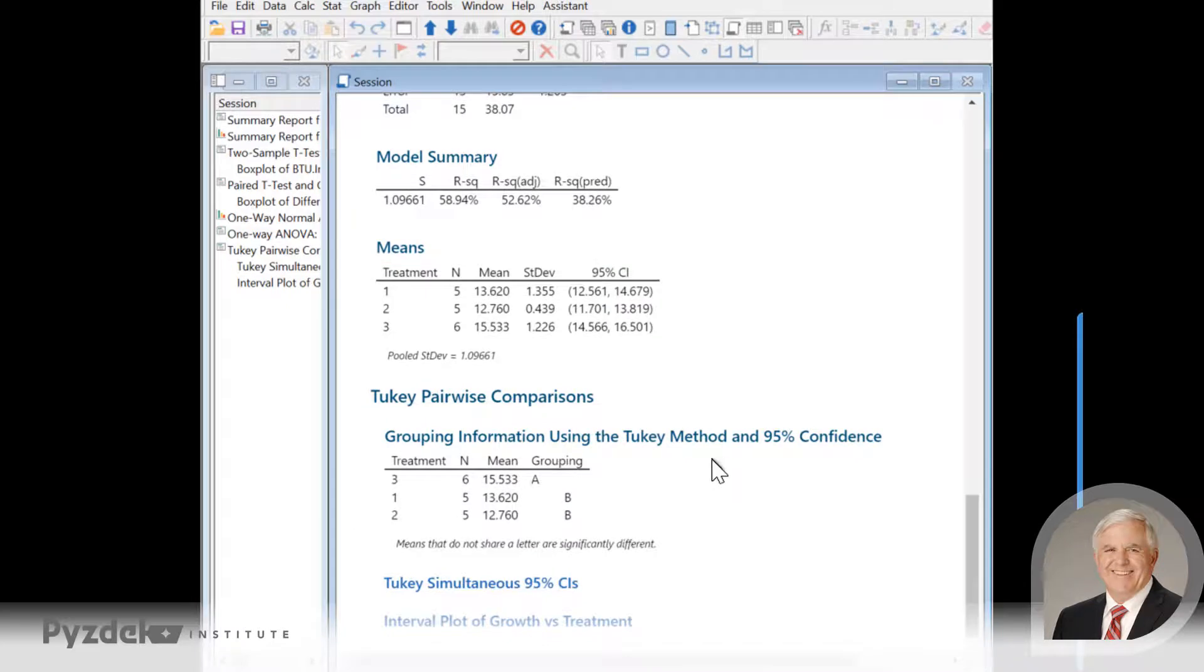But now we have something additional. We have the pairwise comparisons. The Tukey test tells us the different groups that we have. Treatment three with a mean of 15.533 is in a group all by itself. We call that group A. Treatments one and two are in their own groups. So they're significantly different than treatment three, but they're not significantly different from one another.